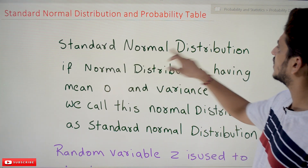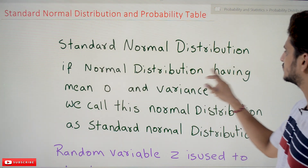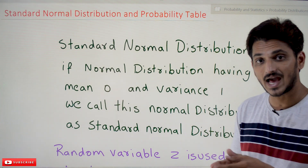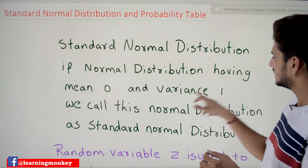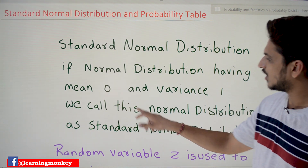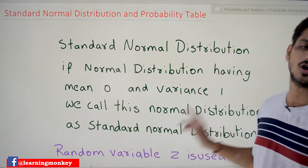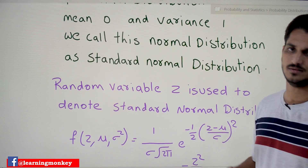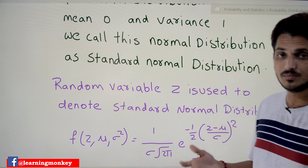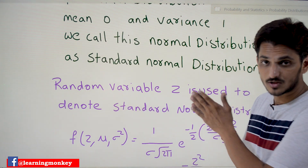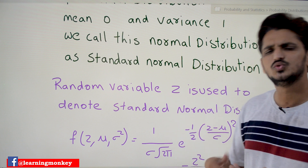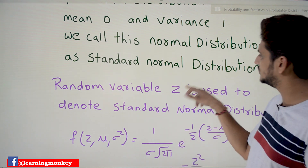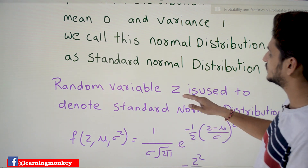Standard normal distribution: if a normal distribution has a mean value of zero and variance of one, then we call it a standard normal distribution. It's very simple to understand — mean is zero and variance is one. The random variable used to denote standard normal distribution is Z. Usually we use X as our random variable, but for standard normal distribution we use Z, which most textbooks follow.